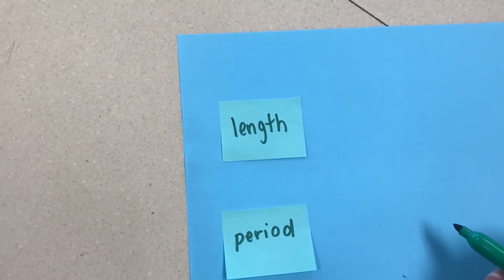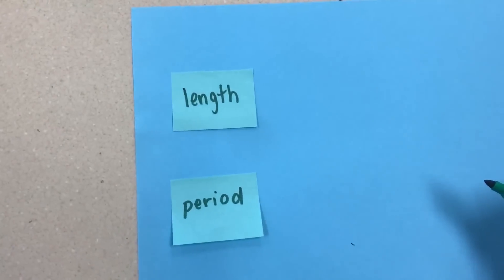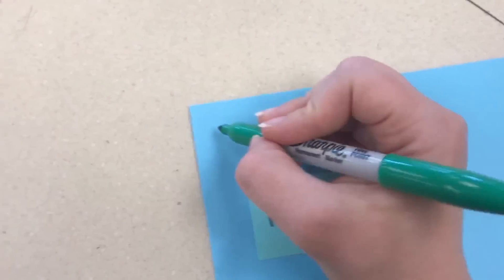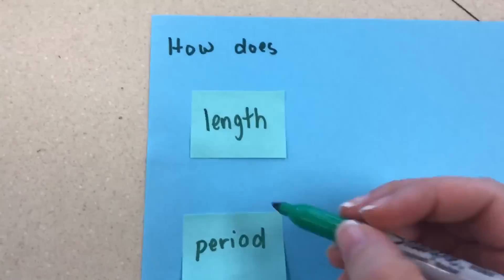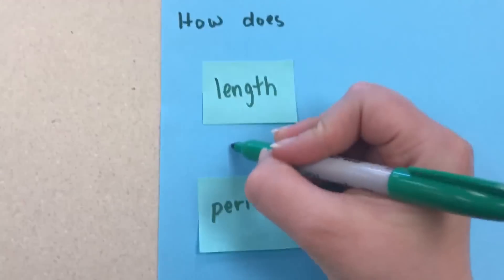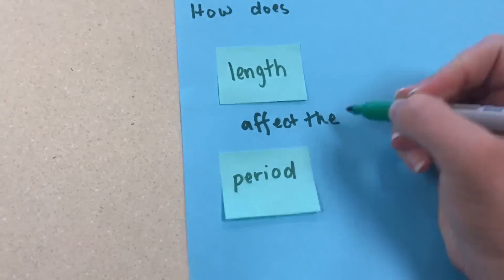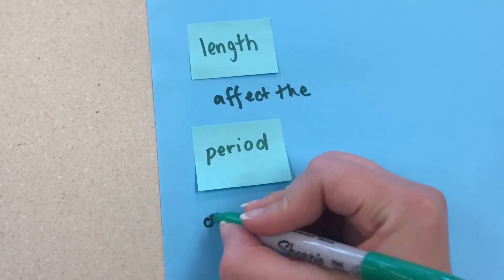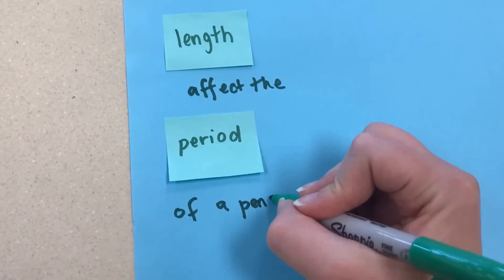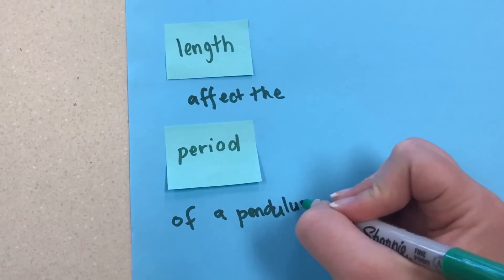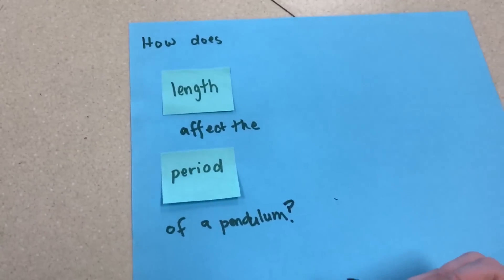When writing a question, we can just use this independent variable and the dependent variable already listed here. So for example, how does length affect the period of a pendulum? And every good question ends with a question mark.